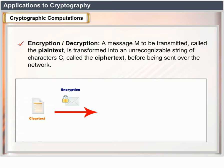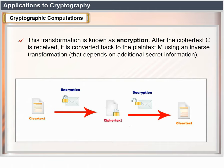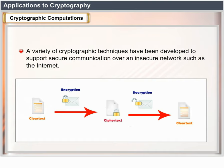Cryptography research has developed the following useful cryptographic computations. Encryption and decryption: a message M to be transmitted, called the plain text, is transformed into an unrecognizable string of characters C, called the ciphertext, before being sent over the network. This transformation is known as encryption. After the ciphertext C is received, it is converted back to the plain text M using an inverse transformation that depends on additional secret information. This reverse transformation is called decryption.